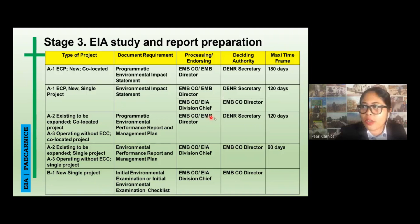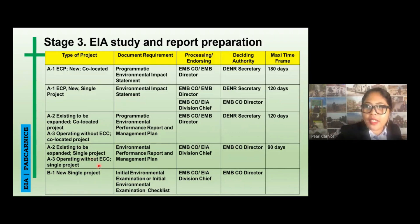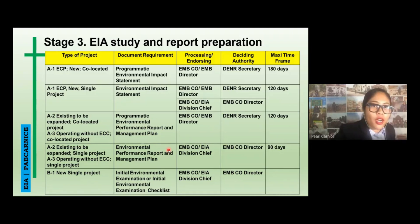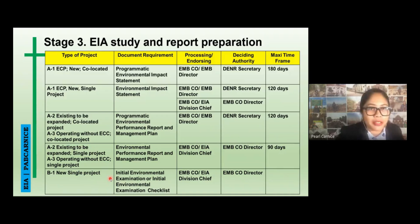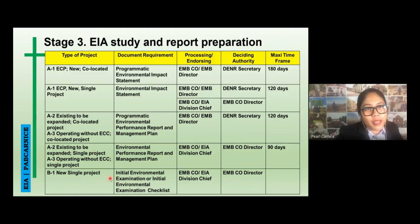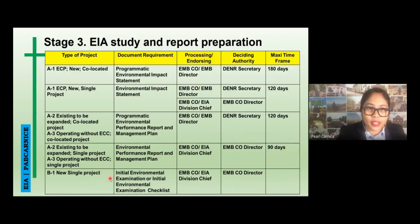The same processing and endorsement and deciding authority apply, and it would take at least four months for the ECC to be issued. For existing to be expanded single projects or operating without ECC single projects, the requirement is an Environmental Performance Report and Management Plan, with the same processing and endorsing authority, with the deciding authority being the EMB Director or CEO Director, and a maximum processing time of three months. For a single new Category B1 project, the required document is an Initial Environmental Examination or IEE checklist; processing and endorsing is by the EMBCO or EAA division chief, and the deciding authority is the EMBCO director, with no strict maximum timeframe — it may only take a few weeks.